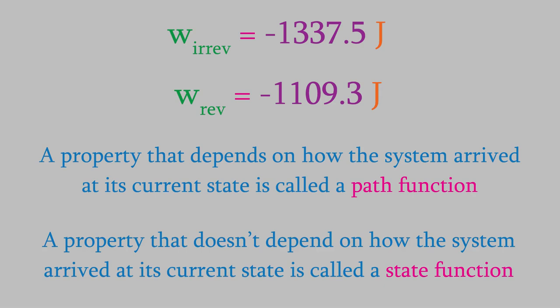As we'll see in the next few videos, heat is also a path function, because heat also depends on the path the system follows as it goes from the initial state to the final state. On the other hand, there are lots of properties that don't depend on the path that was used to get from the initial state to the final state. And those properties are called state functions. For example, the energy of a system is a state function. The energy only depends on the state of a system. It doesn't matter how the system got into that state.